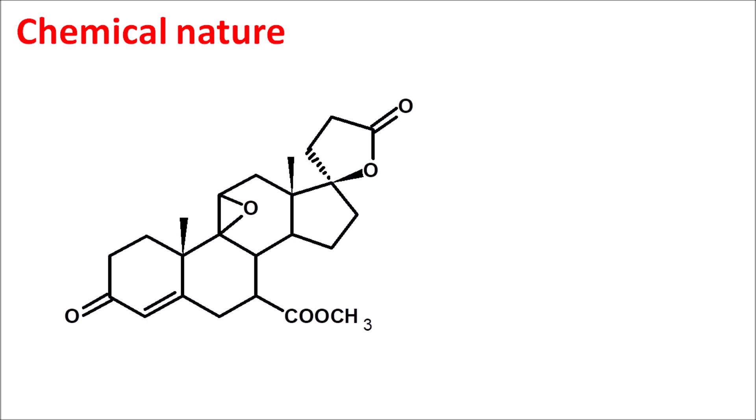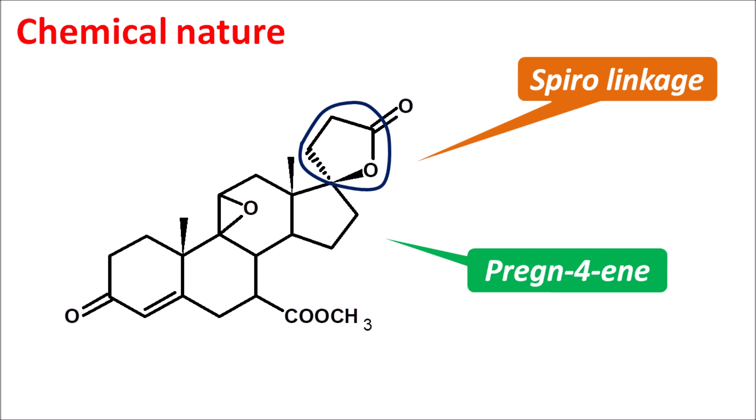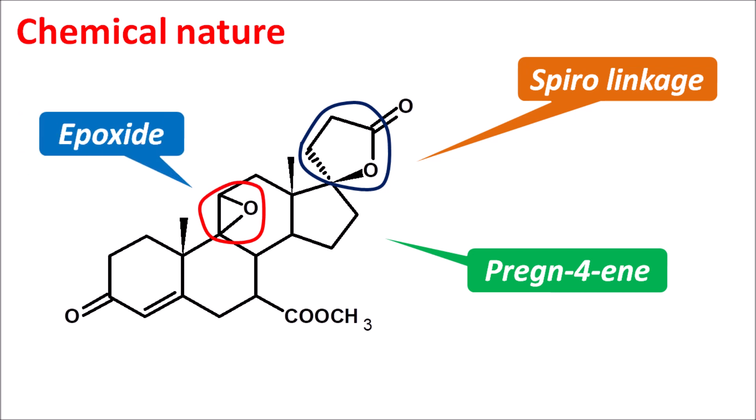Now let us look at the chemical nature of this drug. We can observe a steroidal ring system here — this is nothing but pregnane with a double bond at the fourth position, so pregnenone is the nucleus within the eplerinone structure. It has a five-membered ring fused to the steroidal nucleus, similar to spironolactone. One key difference is that eplerinone is an ester derivative and it also has an extra epoxide linkage, which prevents formation of the metabolite responsible for gynecomastia. That is why eplerinone has less gynecomastia compared with spironolactone.